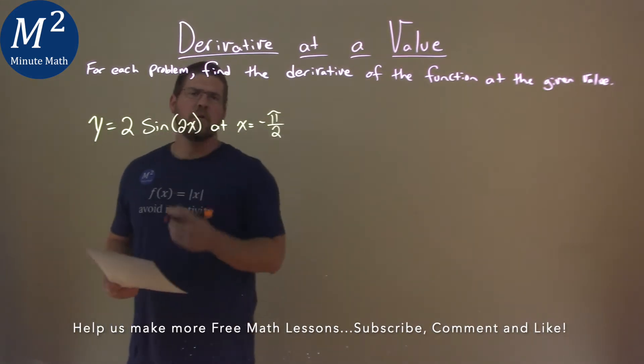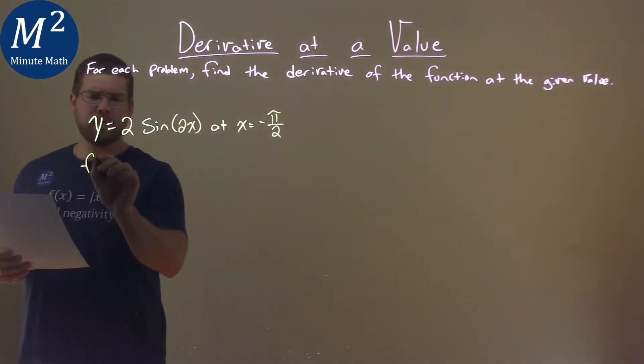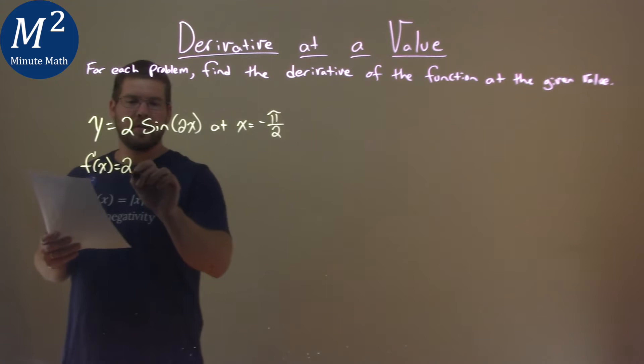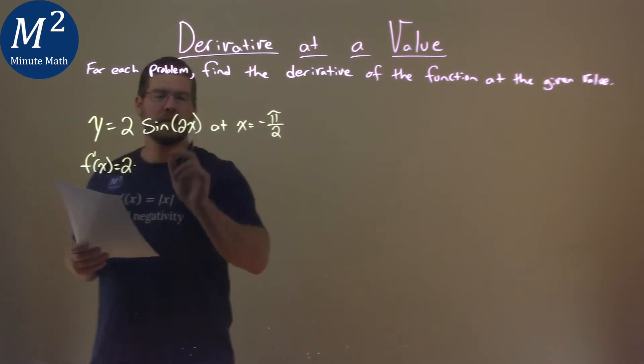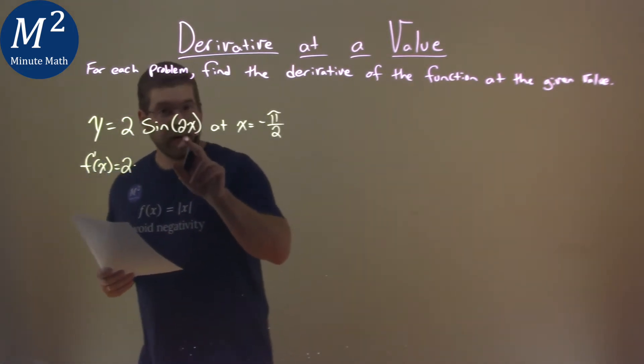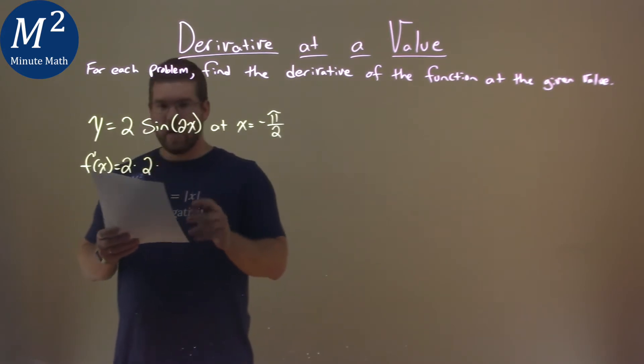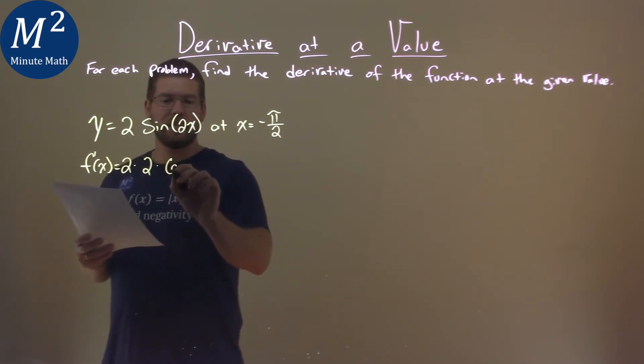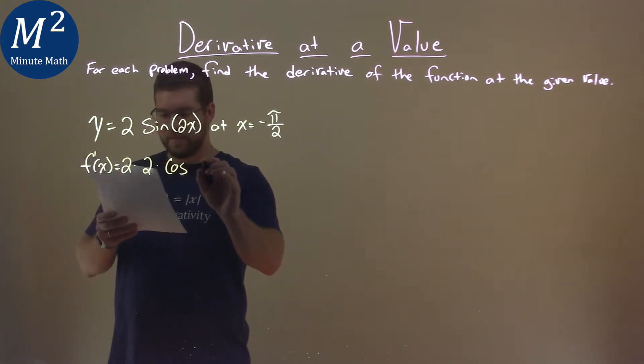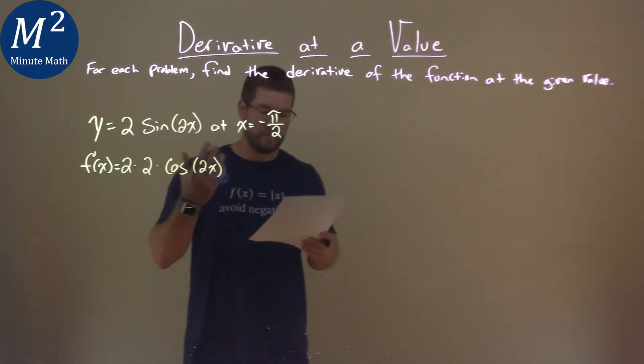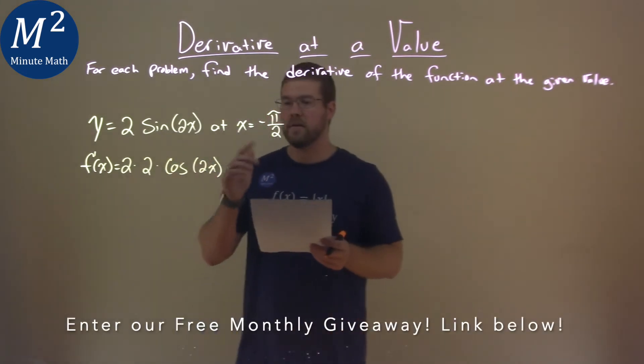Well first let's go find the derivative of our function. f prime of x is equal to... well the 2, the constant, can just stay out there, don't really worry about that. But then we're multiplying that by the derivative of the inside, derivative of 2x, which is a 2, times derivative, and then this becomes cosine of the inside, which is 2x. Because remember, derivative of sine of u is u prime cosine of u.